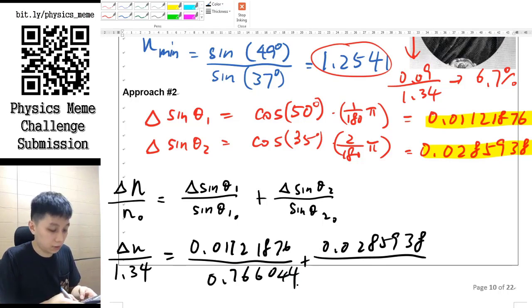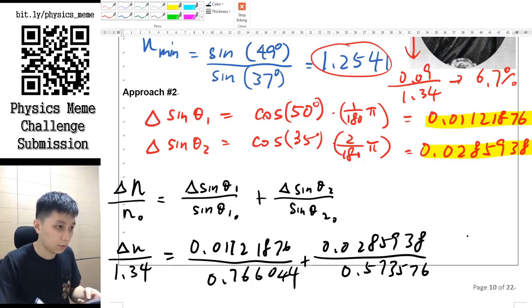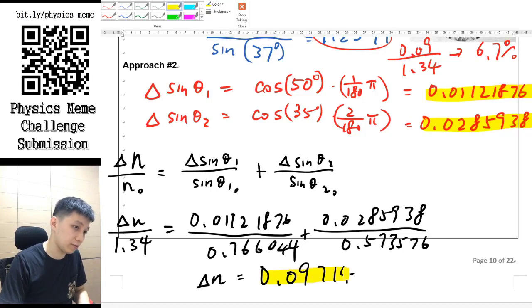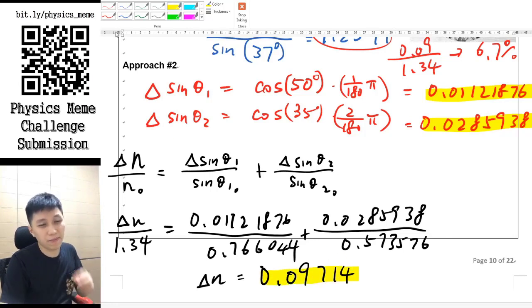and sin 35. Okay, and so then you just have to use your calculator to find out the answer. After a long time of pressing the calculator, you find the answer to be 0.09714 something like that.